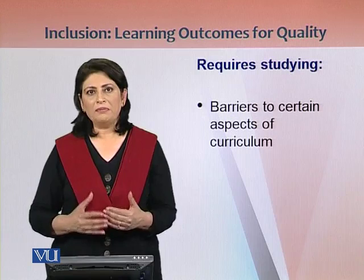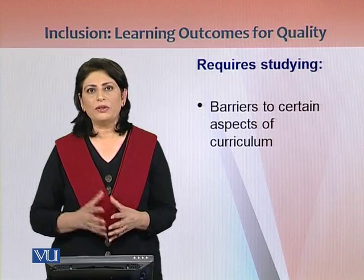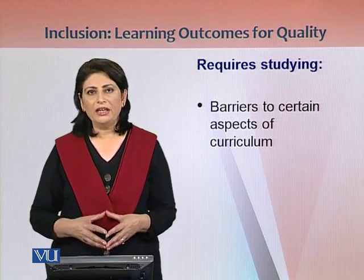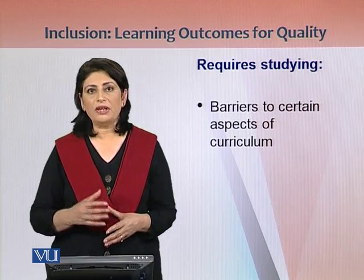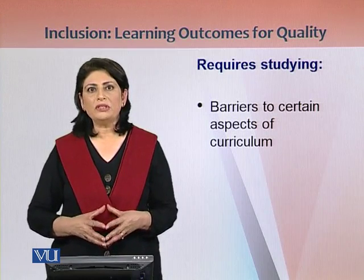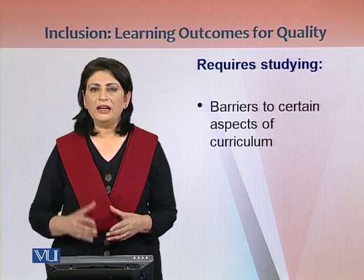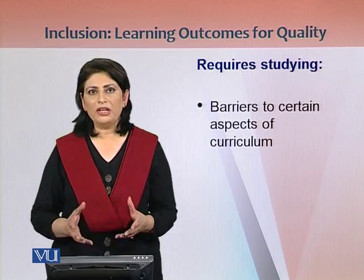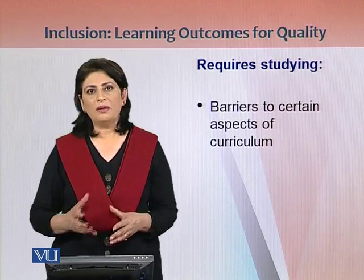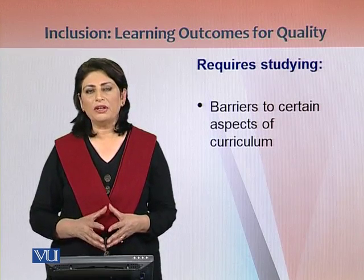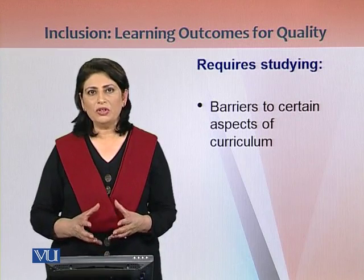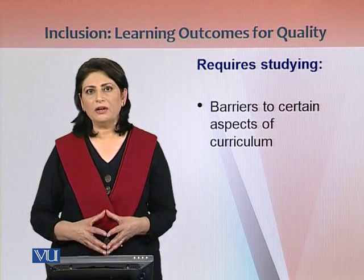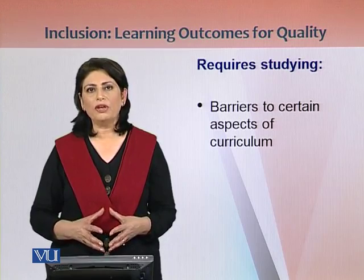For instance, take the example of matriculation results. First you look at the overall pass rate — how well children are doing overall. But another important aspect is to see whether they are performing well across all subjects, or whether they are consistently doing well only in math, or mostly in language. This subject-specific performance gap is a very big issue at the global level. So barriers to certain aspects of the curriculum are also a problem that falls under the umbrella of inclusion, and we need to examine it when looking at learning outcomes within the social justice framework for educational quality.